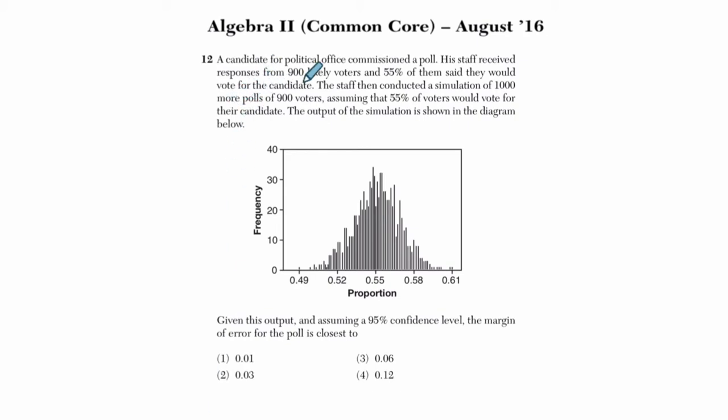This is a candidate for political office who commissioned a poll. His staff received responses from 900 likely voters—that's our population—and 55% of them said they would vote for the candidate. The staff then conducted a simulation of 1,000 more polls of 900 voters, assuming that 55% would vote for the candidate. The output of the simulation is shown below. Given this output and assuming a 95% confidence level, the margin of error for the poll is closest to which of the following.